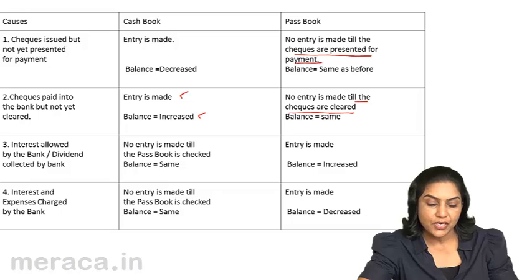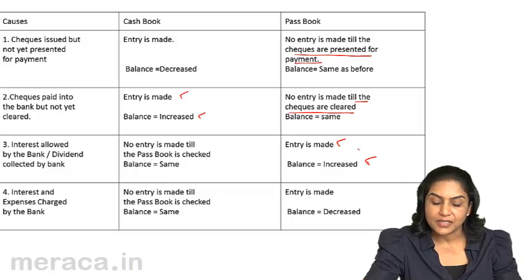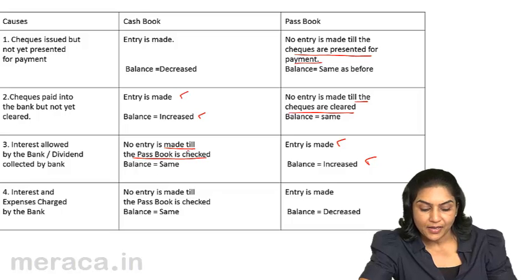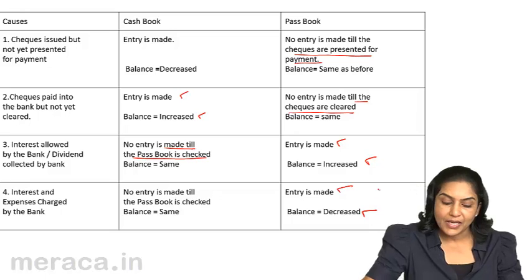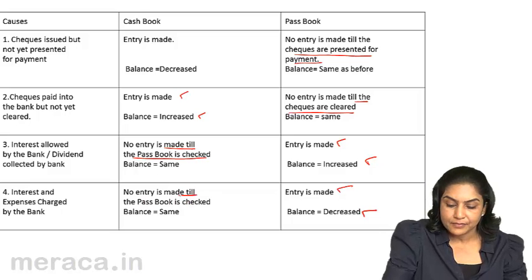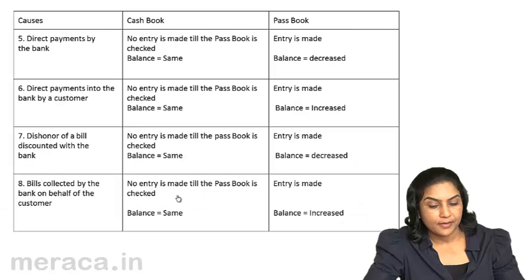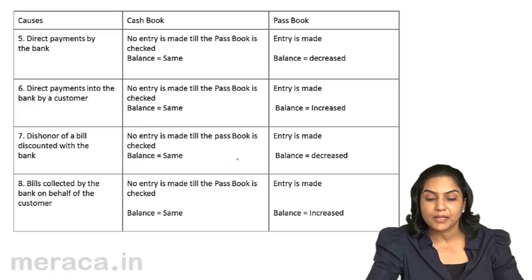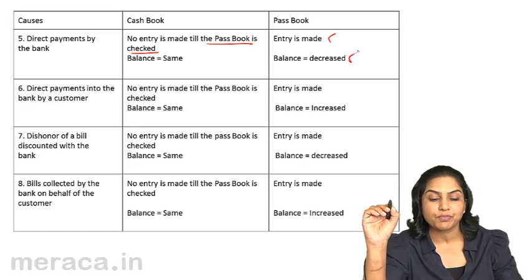Similarly, when interest is allowed by the bank or dividends are collected by the bank, the bank records it immediately and the passbook balance increases, but no entry is made in the cashbook until the passbook is checked. When interest and expenses are charged by the bank, entry is immediately made in the bank's books and the passbook balance comes down, but no entry is made in the cashbook until the passbook is checked.